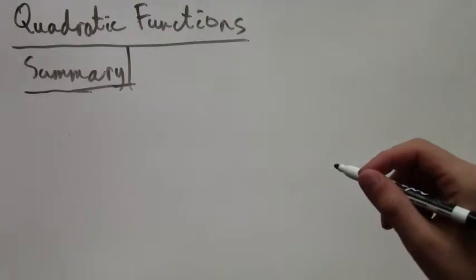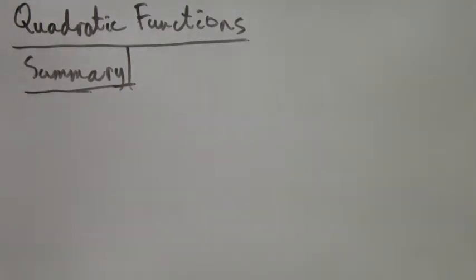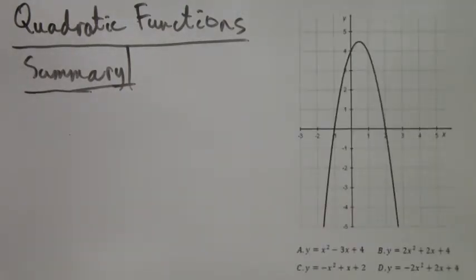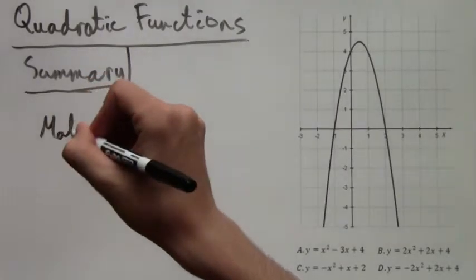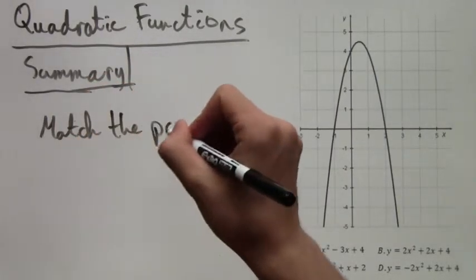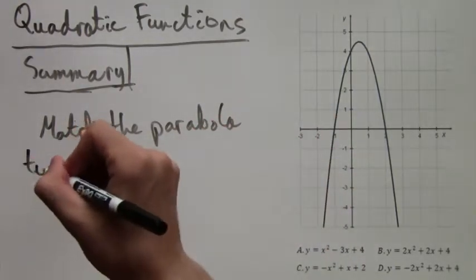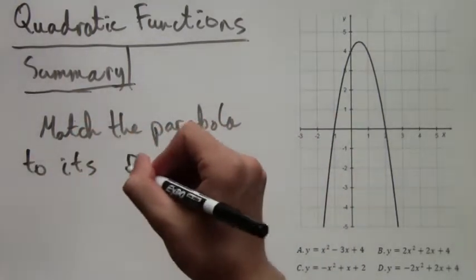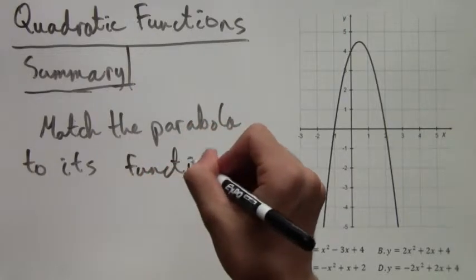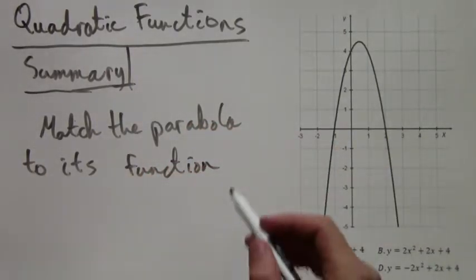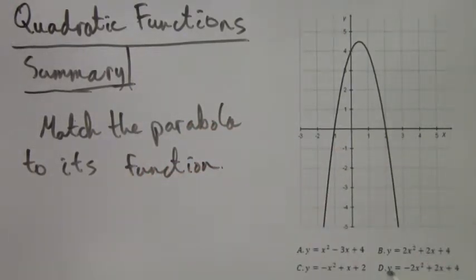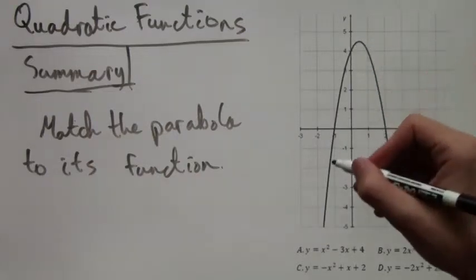So this first question will be you're given this graph. Your job is to match this parabola to one of the functions below it. There are four answer choices A, B, C, and D. So in this sort of test question the best strategy is the process of elimination.